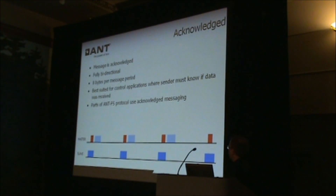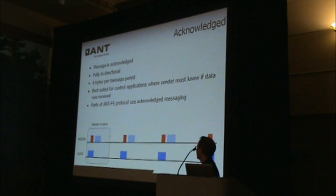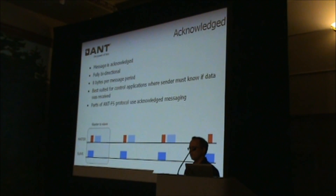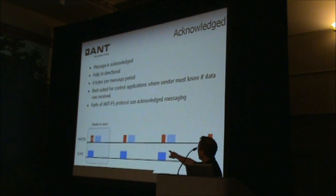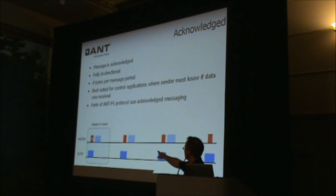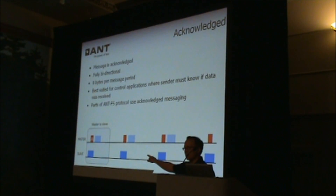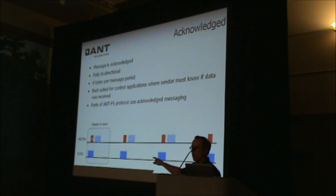If you look at an acknowledged transaction from the master to the slave, it looks something like this. The application MCU will need to flag a message as being acknowledged. That flag will actually be indicated in the over-the-air message that gets sent by ANT. So on the far left, I have a message that's going to go over the air, flagged as acknowledged, and that's an indicator to the slave that this is a message that requires an acknowledgement.